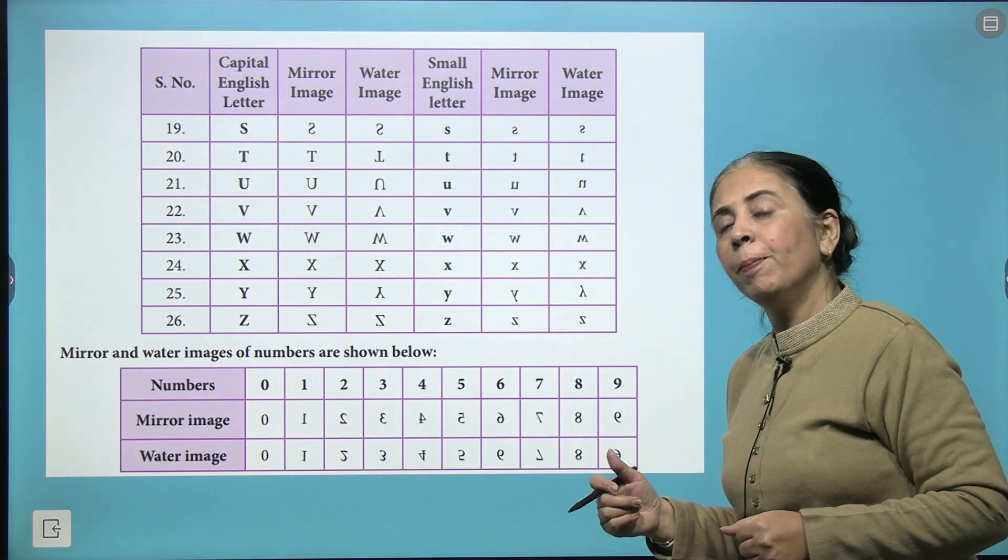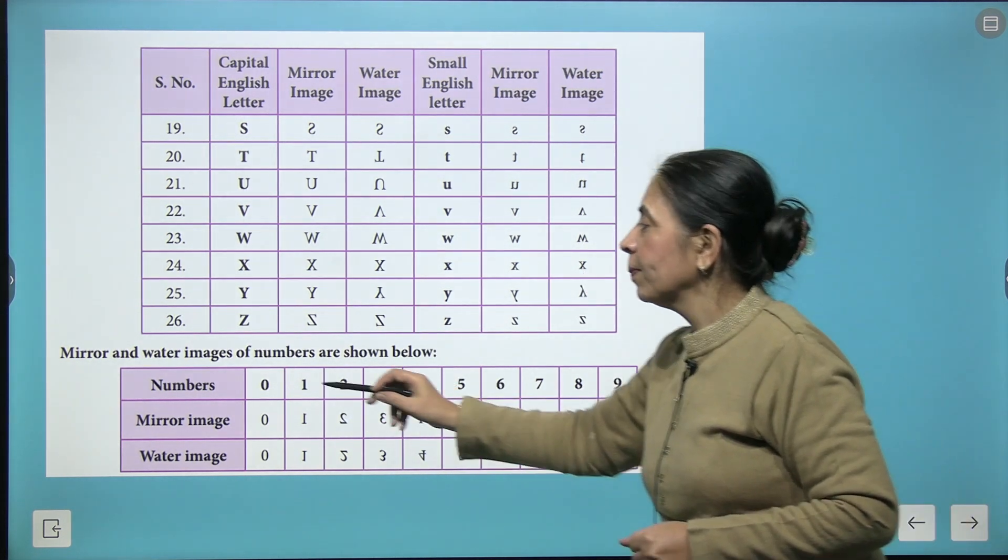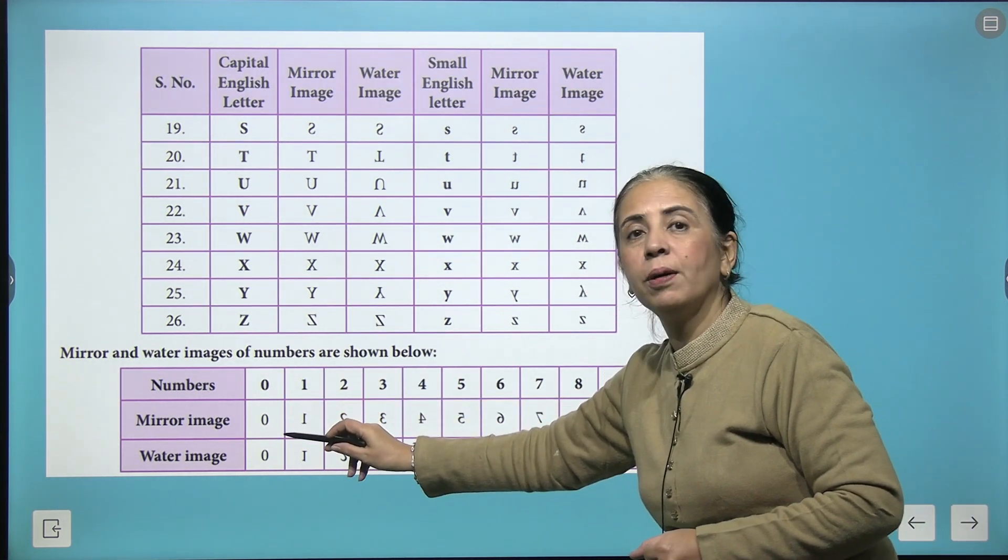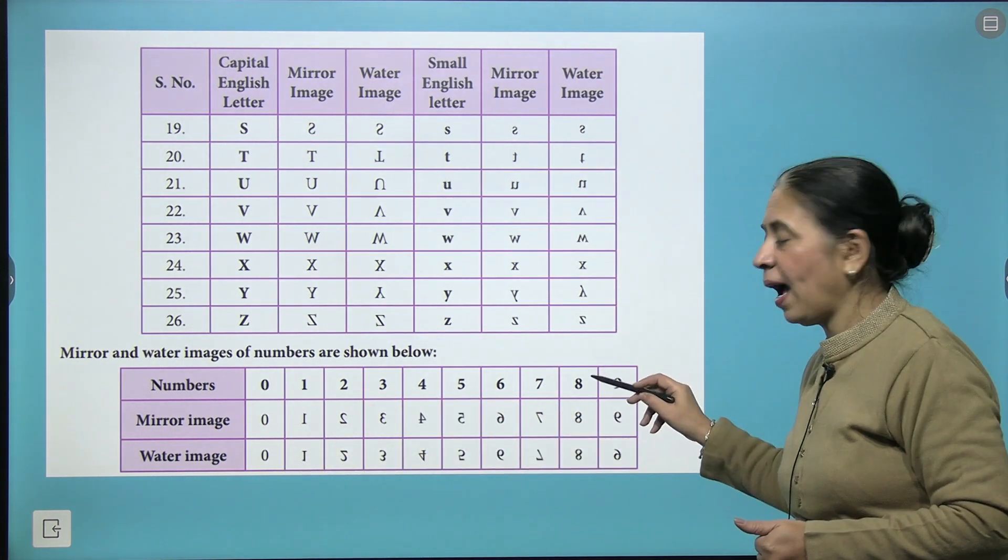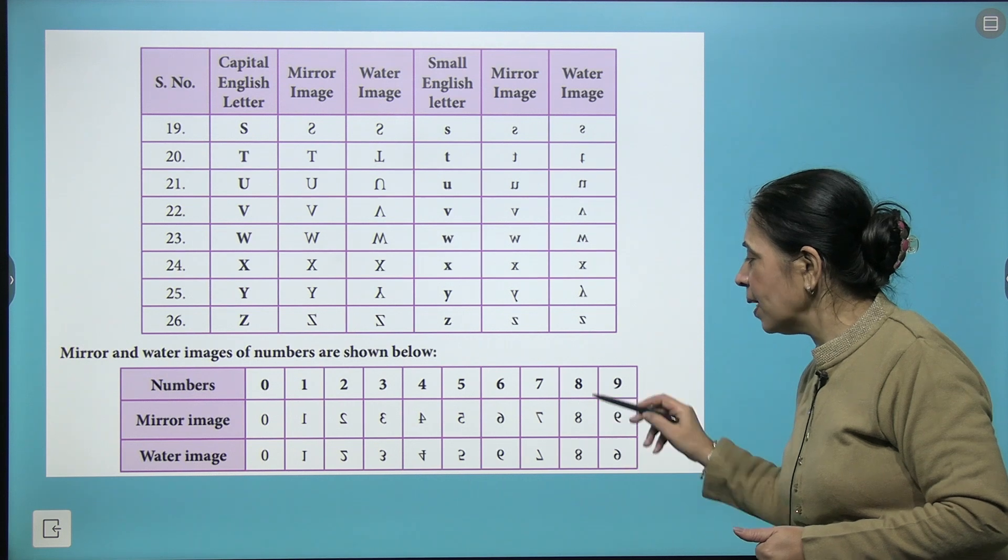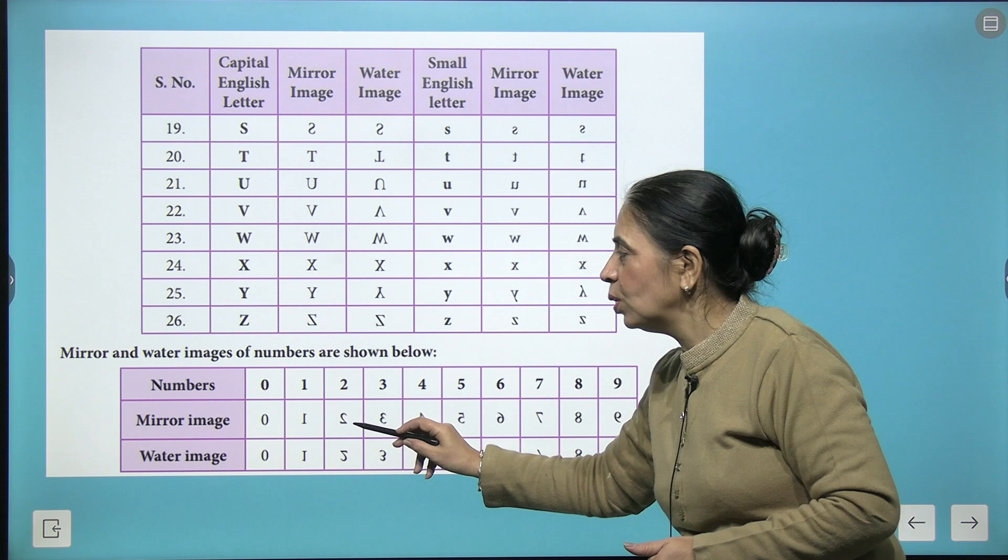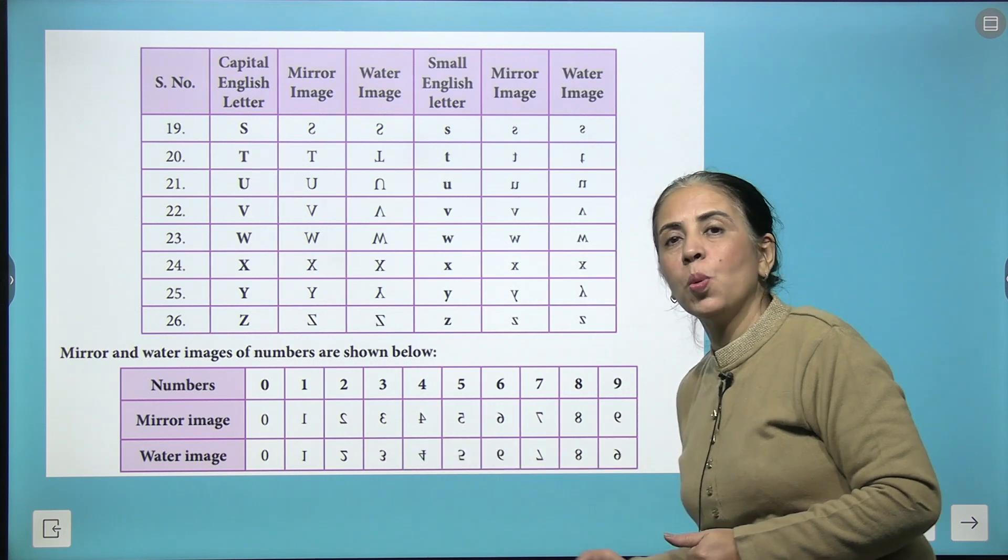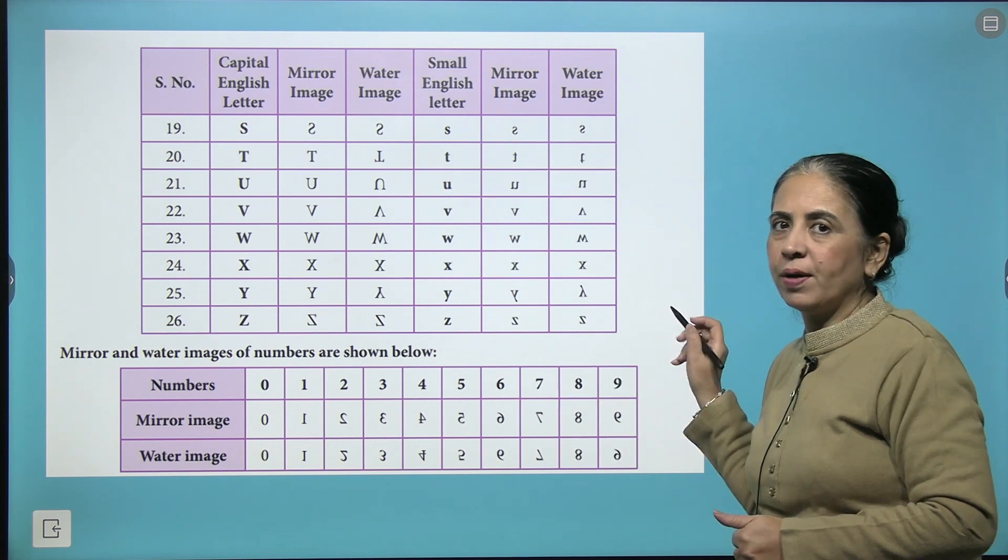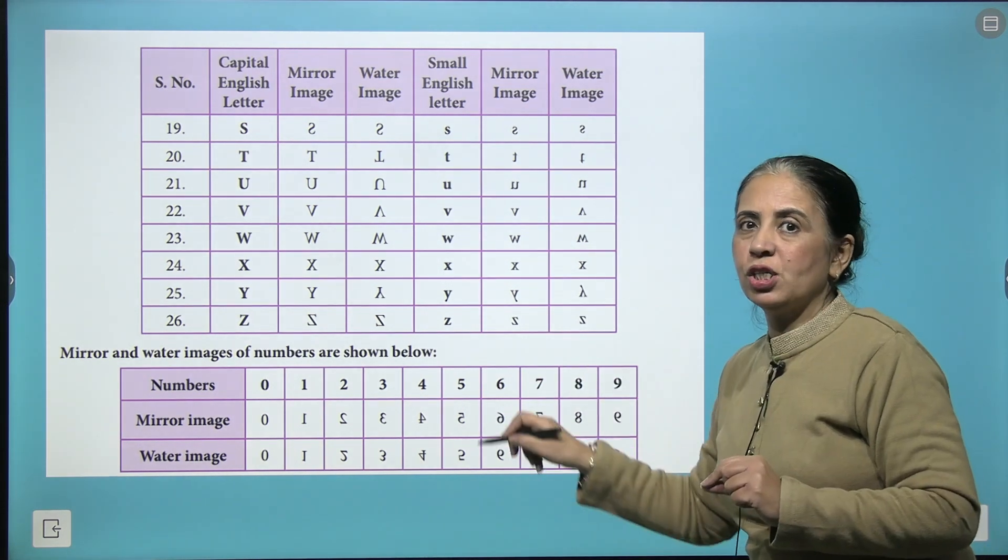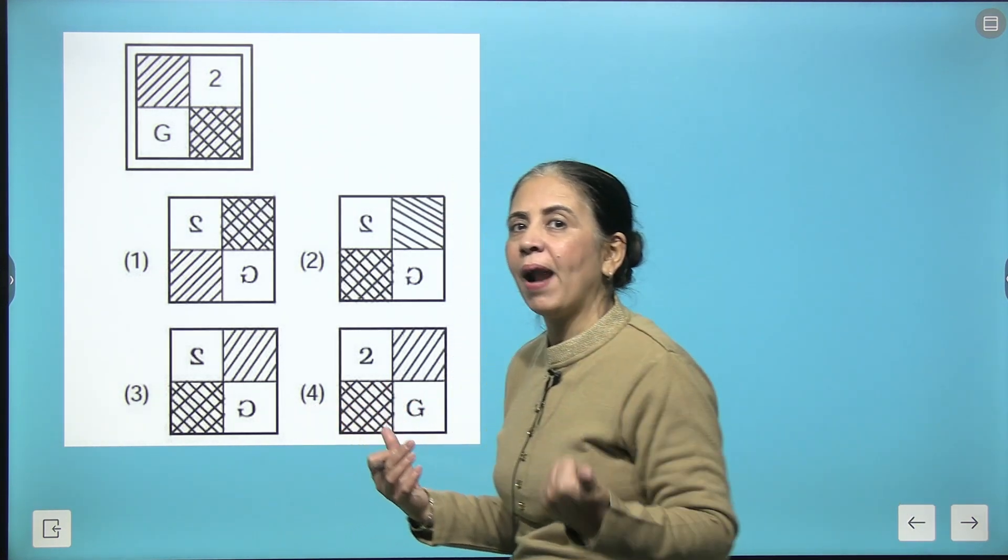Then apart from this, I brought some numbers also for you. See, this is number zero - the mirror image and the water image exactly look the same. And we have eight also, the same thing happens here. Coming to two, this is the mirror image, this is the water image, and this way all the numbers from zero to nine are written here. So be very careful initially, and then it will become a practice and you will be cracking the questions properly.